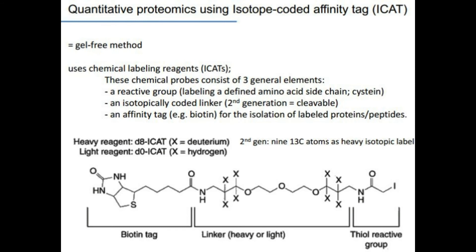We can also look at quantitative proteomics using isotope-coded affinity tags, the ICAT technique. This is gel-free, and uses a probe called an ICAT of two types: one consisting of a deuterium molecule (heavy reagent) and one consisting of a hydrogen molecule (light reagent). Each ICAT is composed of three parts: a reactive group that labels defined amino acid side chains such as cysteine, an isotopically coded cleavable linker that determines whether the ICAT is heavy or light, and an affinity tag (biotin) for isolation of labeled proteins.